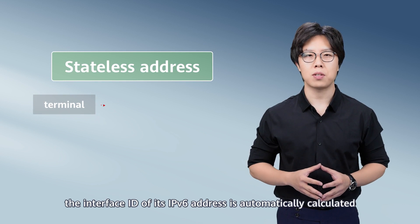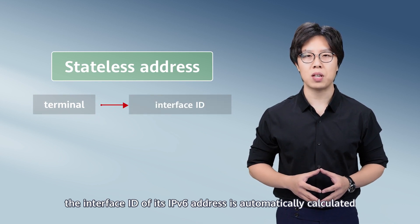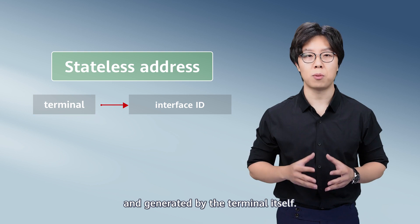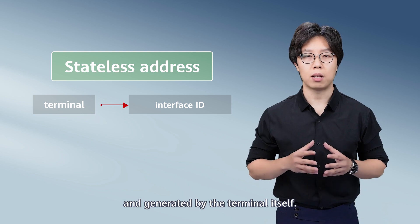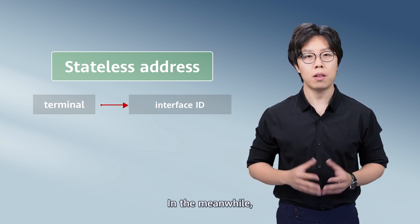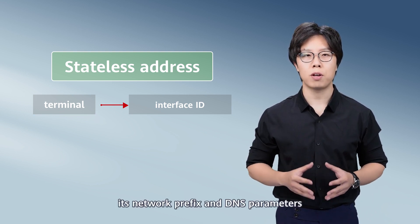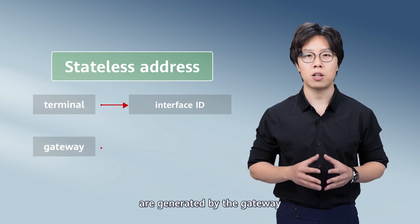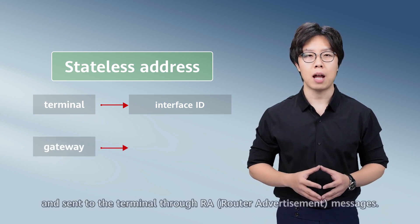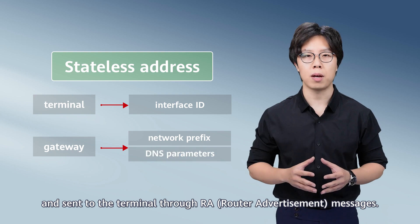When a terminal uses stateless address autoconfiguration, the interface ID of its IPv6 address is automatically calculated and generated by the terminal itself. In the meanwhile, its network prefix and DNS parameters are generated by the gateway and sent to the terminal through RA messages.